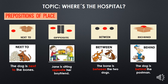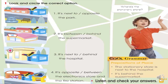Ok, very good students. We are going to start with the book, page number 44, activity number 1. Look and circle the correct option. Vamos a observar y circular la opción correcta de acuerdo a las preposiciones que estamos aprendiendo. La pregunta es: Where is the stationery store? Number 1: it's next to or opposite the park. Number 2: it's between or behind the supermarket. Number 3: it's next to or behind the hospital. Number 4: it's opposite or between the electronic store and the fire station.